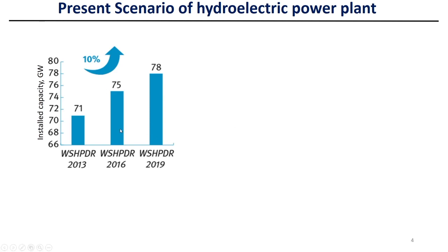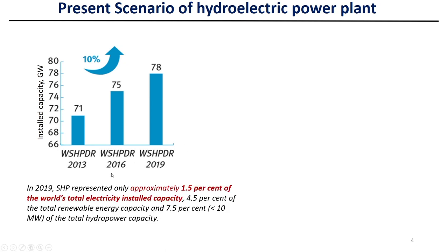The World Small Hydro Power Development Report (WSHPDR) states that in 2013 about 71 gigawatt of small hydro power was installed, and in 2019 it was about 78 gigawatt — a rise of about 10 percent. In 2019, small hydro projects represent approximately 1.5 percent of the world's total electricity installed capacity. In terms of renewable energy, it contributes about 4.5 percent, and as a share of total hydropower capacity the contribution is about 7.5 percent.